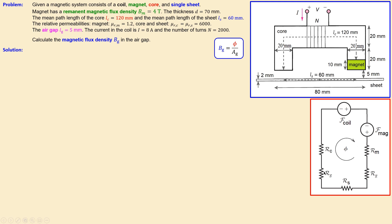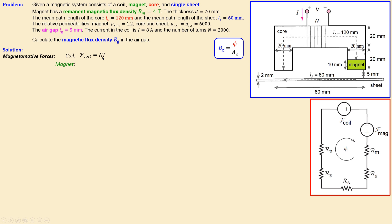We use this circuit to calculate the flux phi, which is equal across all elements in this circuit. Starting with the magnetomotive forces: the coil MMF uses the familiar formula — number of turns times current — giving 16,000 ampere-turns.